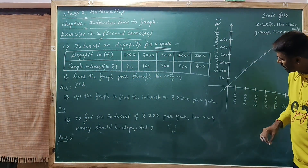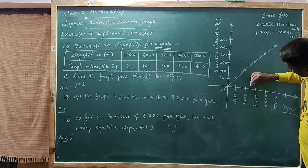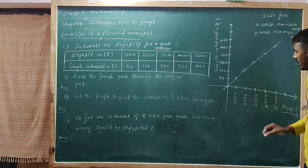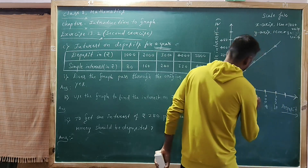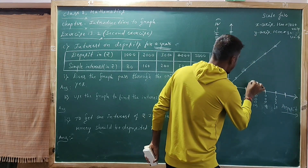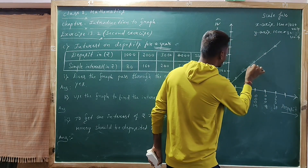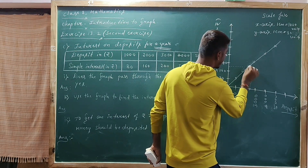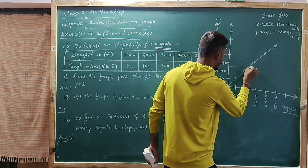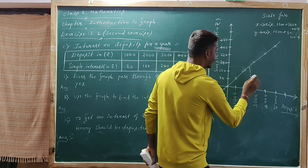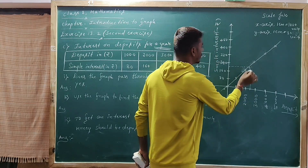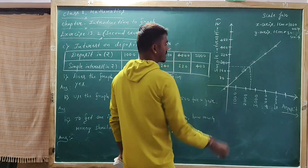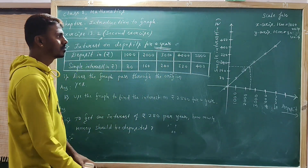Use the graph to find the interest on 2500 rupees. On the graph paper, 2500 is exactly between 2000 and 3000 — the midpoint. Draw a dotted line at 2500. The corresponding interest is between 160 and 240, so the midpoint is 200 rupees.